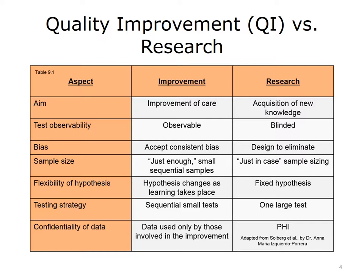When the aim is to acquire new knowledge, data are better collected blinded, when neither the researcher nor the subject are aware of the test being performed. Attempt to eliminate biases when they exist and collect a wide variety of data points for a sample size determined through a power calculation.